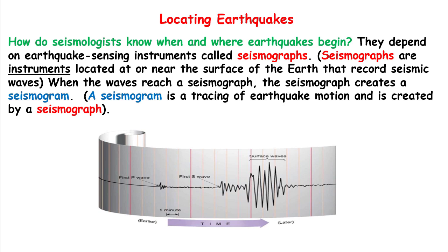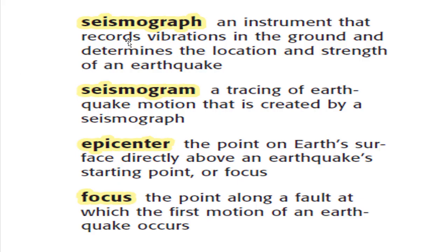A seismogram is the tracing of earthquake motion created by a seismograph. Earthquakes happen on the Earth's crust, and seismographs work on the Earth's crust. A seismograph is an instrument that records vibrations in the ground and determines the location and strength of an earthquake. A seismogram is the tracing of earthquake motion that is created by a seismograph.